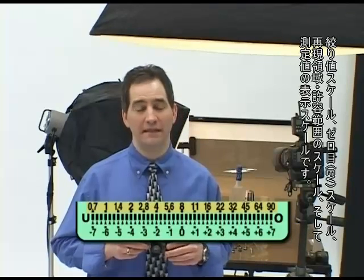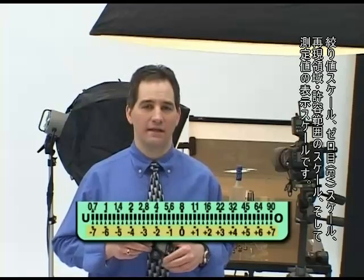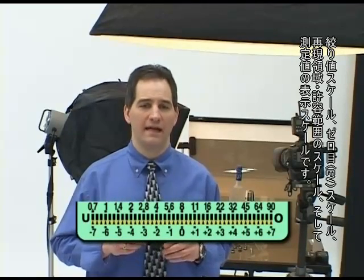There are four data scales displayed on the L75ADR's LCD: the f-stop scale, EV scale, dynamic range and clipping point scale, and the measured value display scale. Each of these scales provides valuable information about the exposure at a glance.